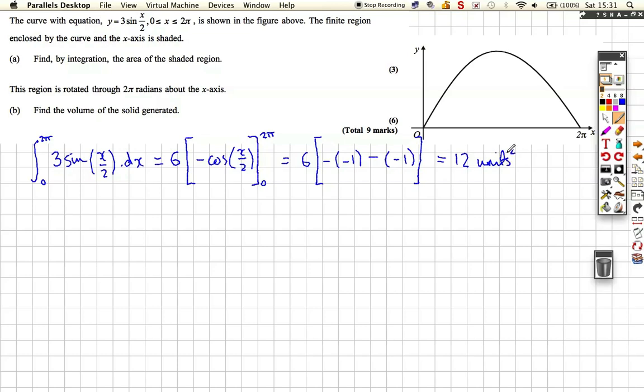That was part A. Part B asks us to spin it around and find the volume of revolution. It's going to be quite hard to draw this, but you're rotating around the x-axis and you're going to get some kind of solid - not a disk shape, not a sphere either.